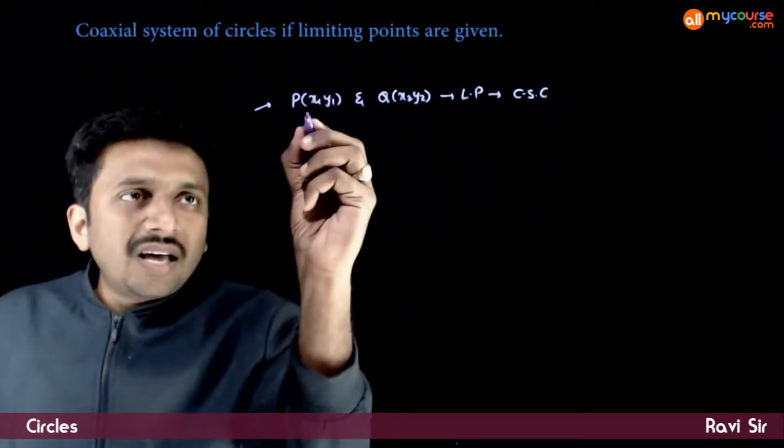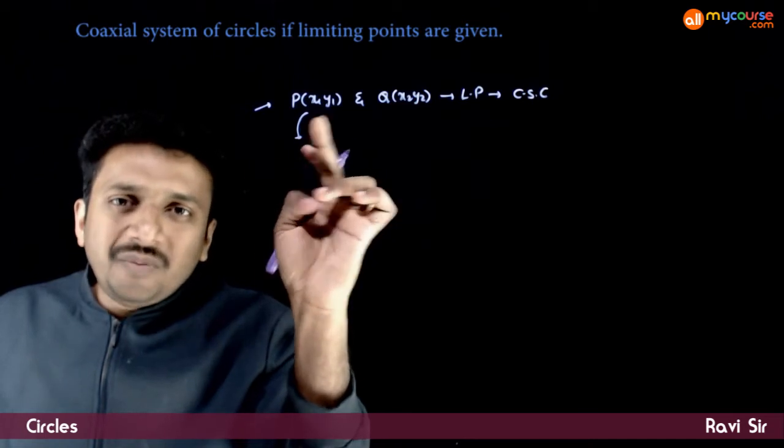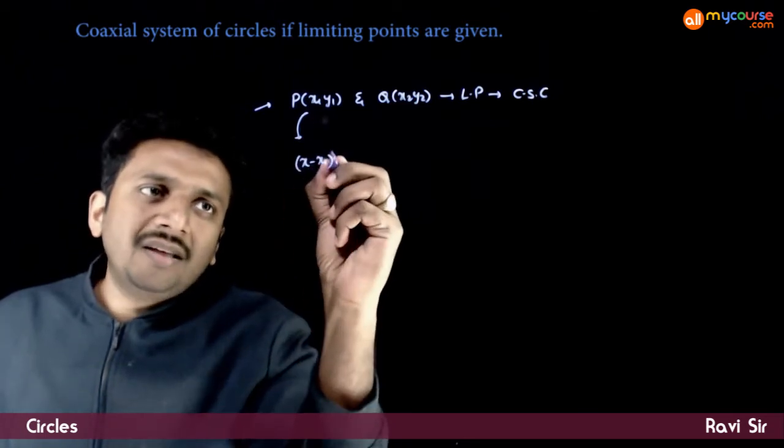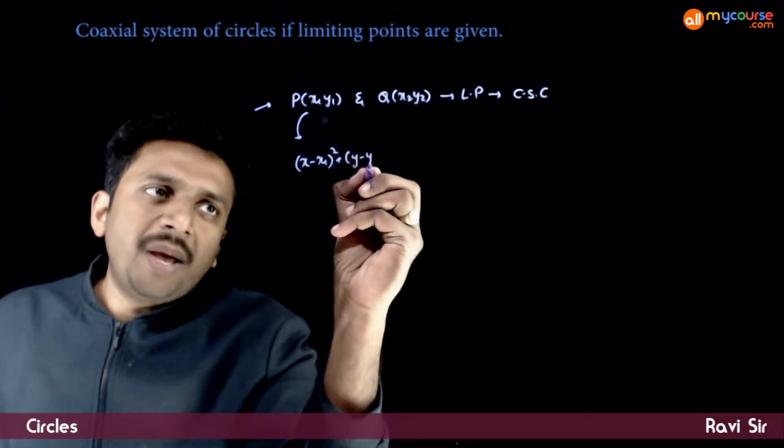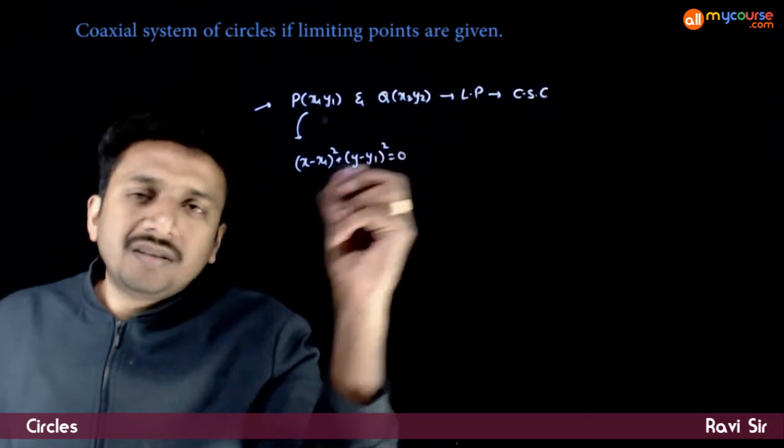because corresponding to each limiting point, you can get a point circle which is a member of the system.